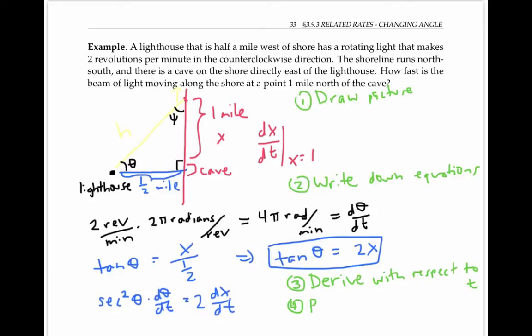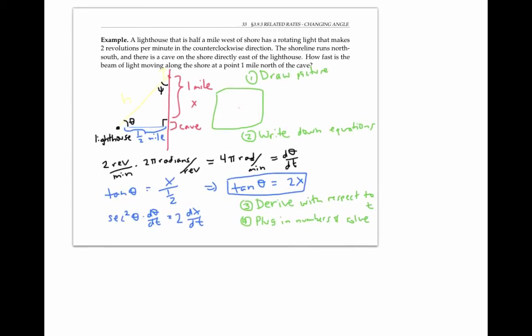Next, I can plug in numbers and solve for my quantity of interest, which is dx/dt when x equals one. We already figured out from the two revolutions per minute that dθ/dt is 4π. Now secant theta is one over cosine theta. And since cosine theta is adjacent over hypotenuse, its reciprocal is hypotenuse over adjacent. So in our picture, that gives us h over one half.